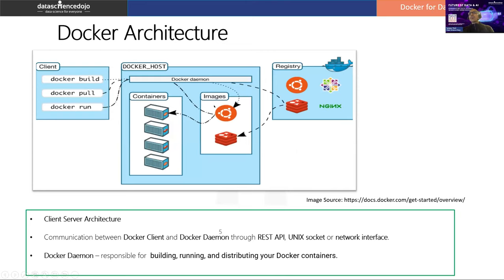Let's look at Docker architecture — this is where a lot of different concepts come together. Images: think of an image like a binary, but the difference is that a Docker image has all the dependencies bundled together. A container is what you get when you run that image — that running instance is a container.